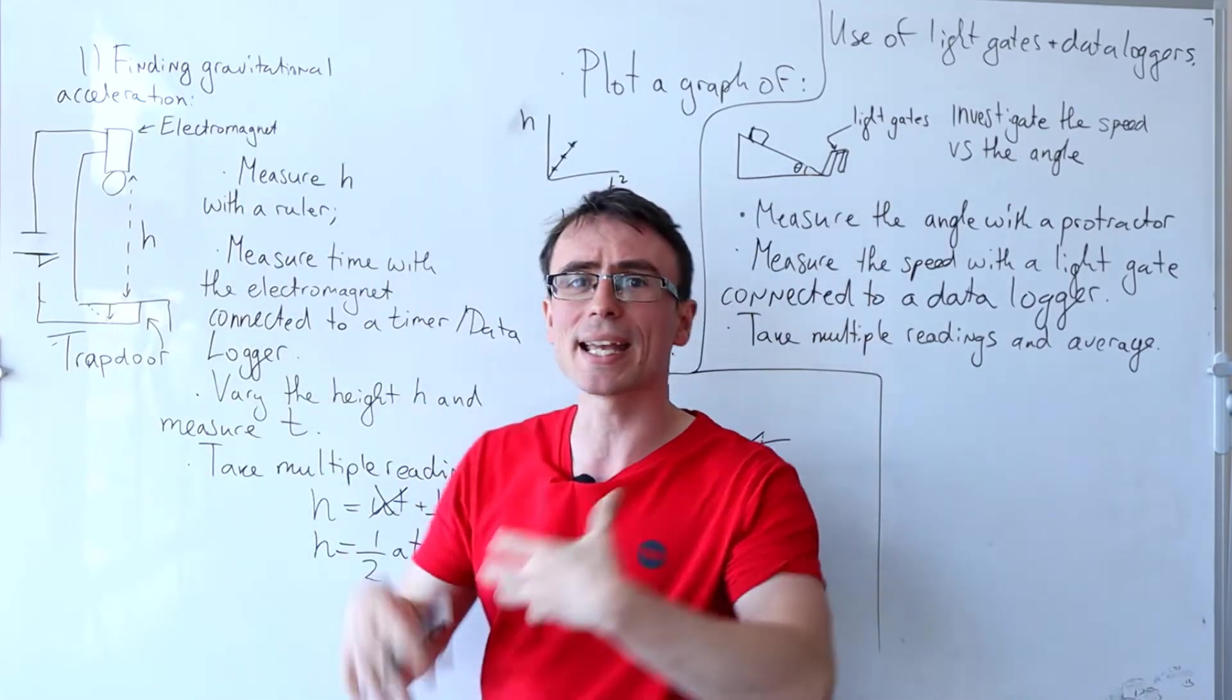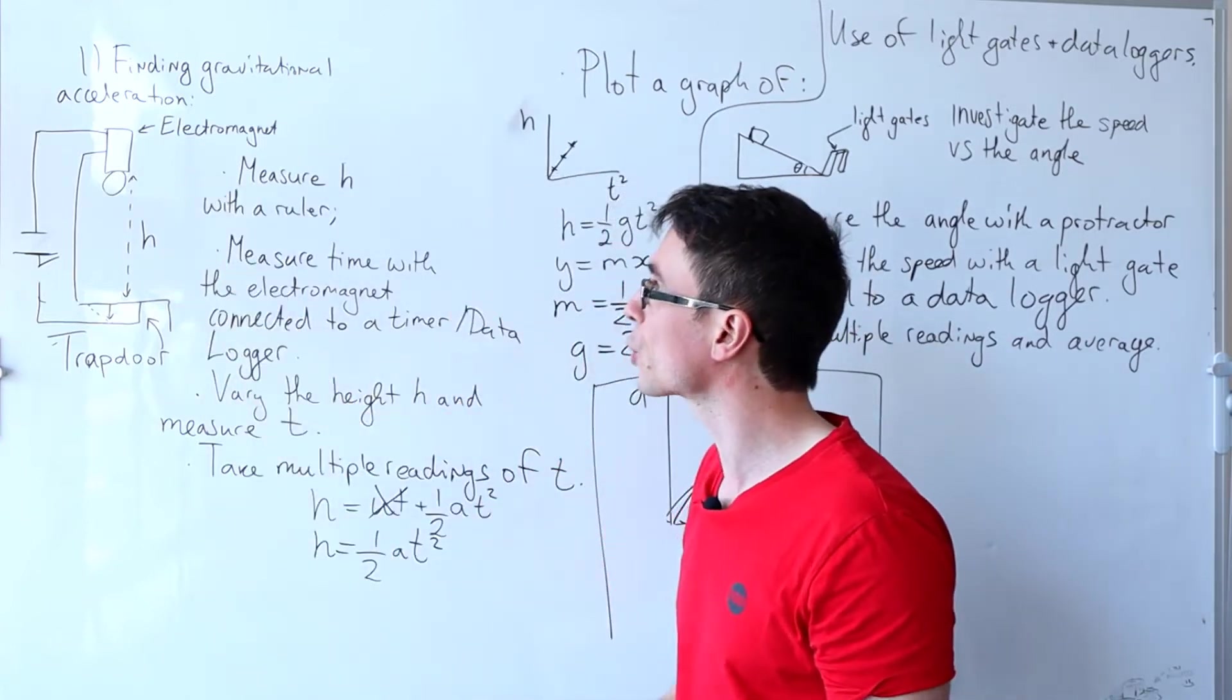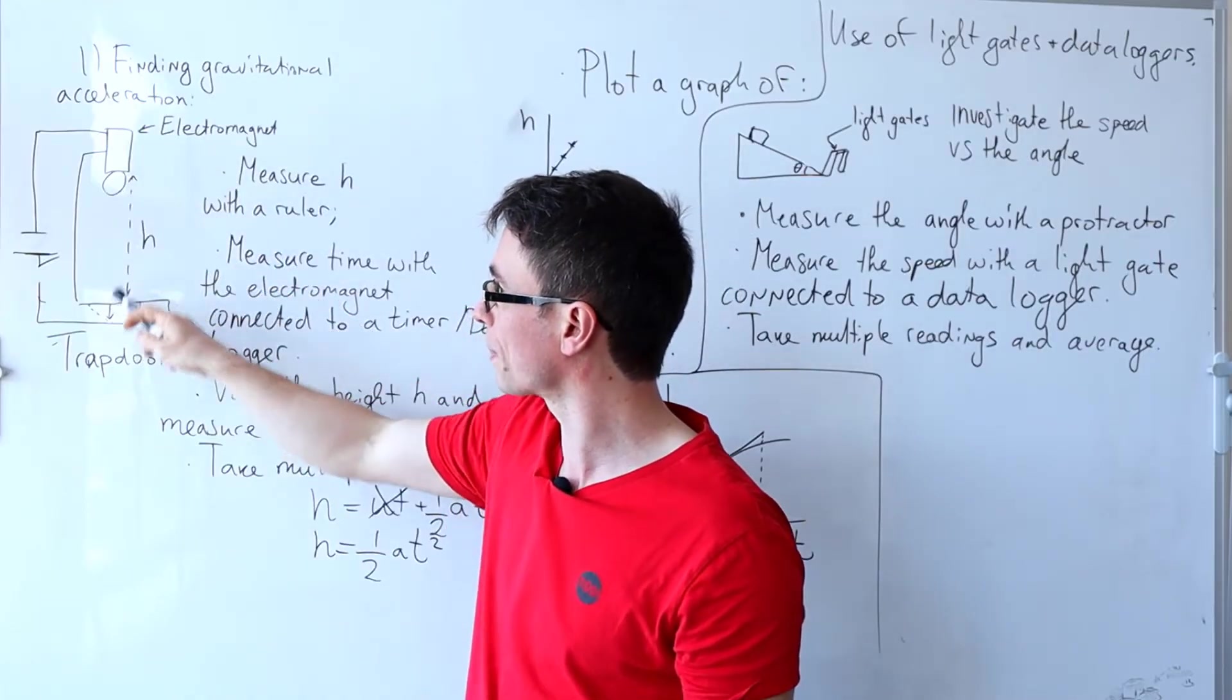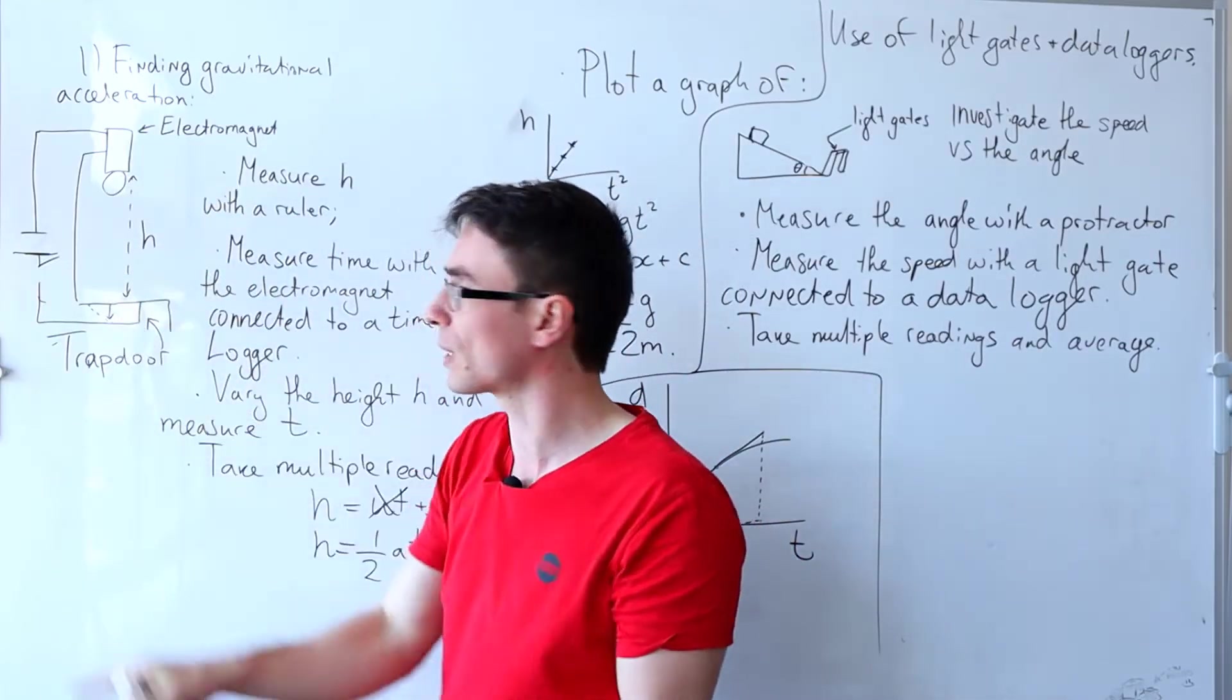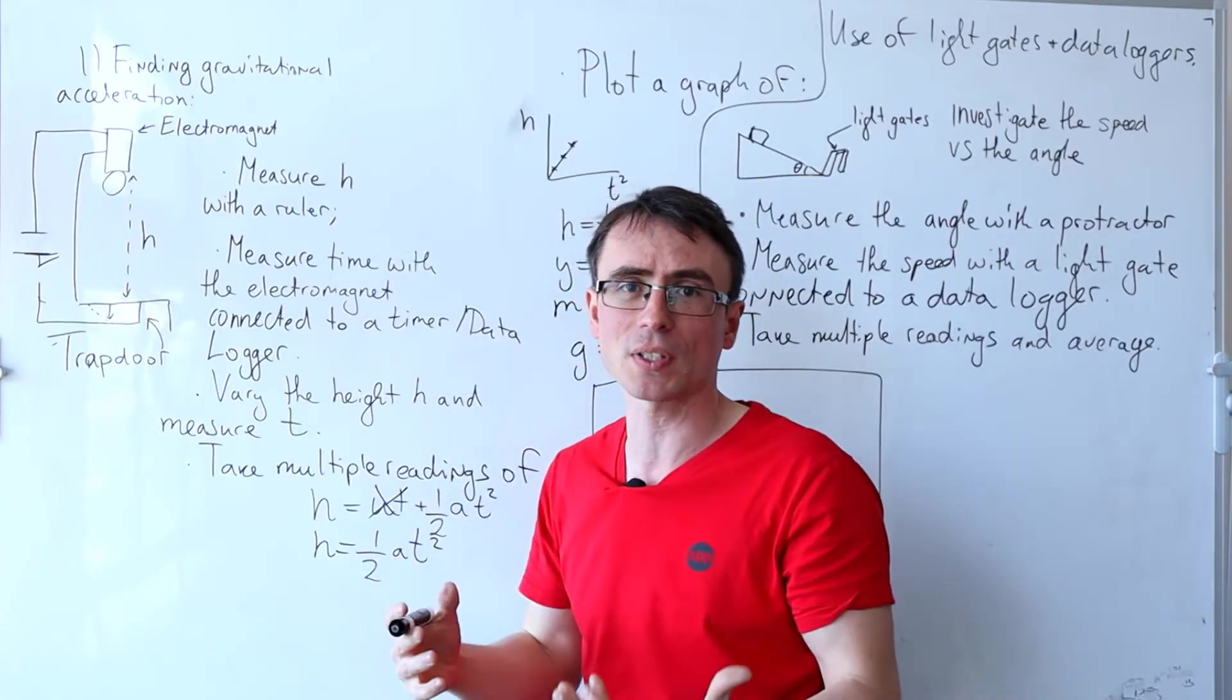The basic idea is that we've connected all of this to a timer and as soon as we flip the switch then the electromagnet stops and then the ball drops and as it passes through the trapdoor it cuts off a part of a circuit and stops our timer.